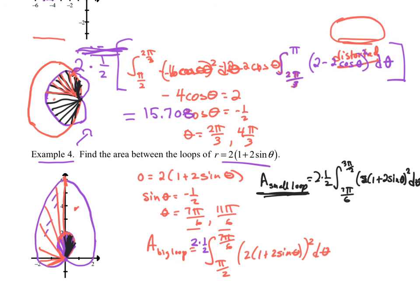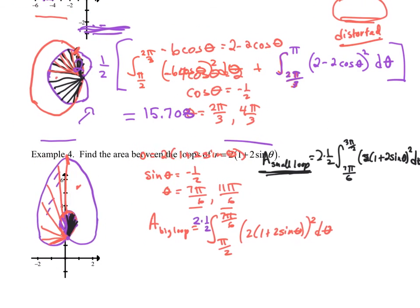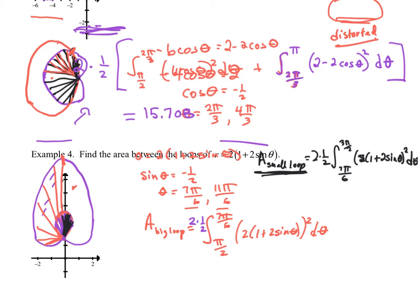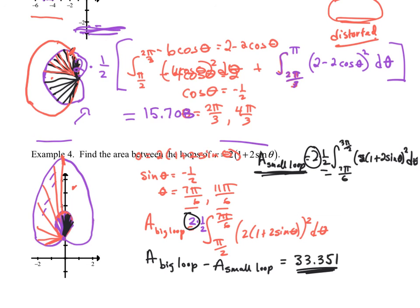Then I just subtract those two areas. When I subtract them and punch that into my calculator, I get 33.351. This one's a little bit trickier, but you just have to play around with it. If you have symmetry, you can use this doubling approach all the time, which cancels out the one-half multiplier that's part of the polar area formula.